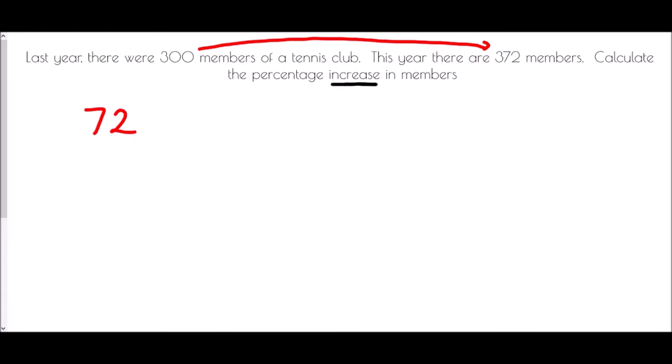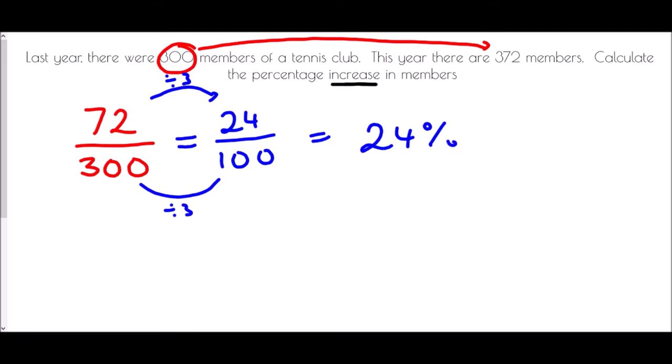Now in order to find a percentage increase I want to compare it to the original amount and therefore I always compare the change to the original amount. I'm using a fraction so 72 over 300. Now if I want to make that into a percentage, what I want to be thinking about is how do I convert fractions to percentages. Well the aim is to get that fraction over 100. At the bottom I've divided by 3 and so at the top I need to do exactly the same. 72 divided by 3 is actually 24 and so if that is 24 over 100 it means that there was a 24 percent increase.